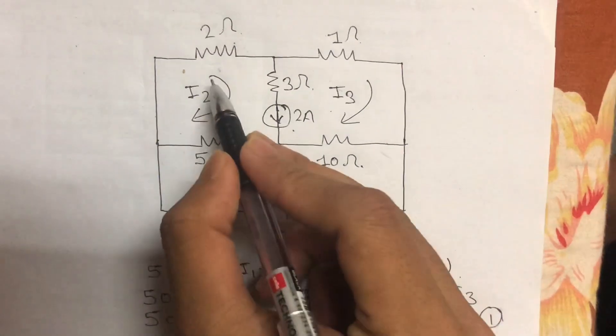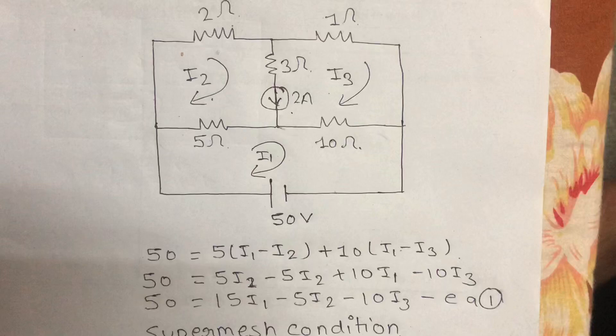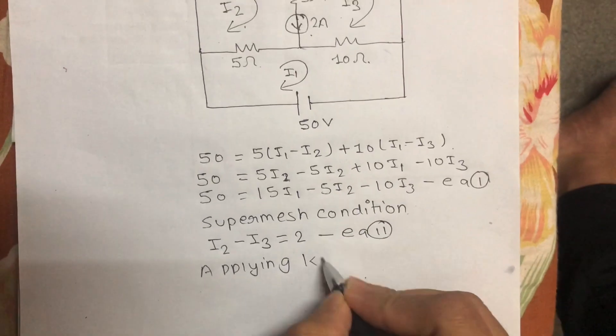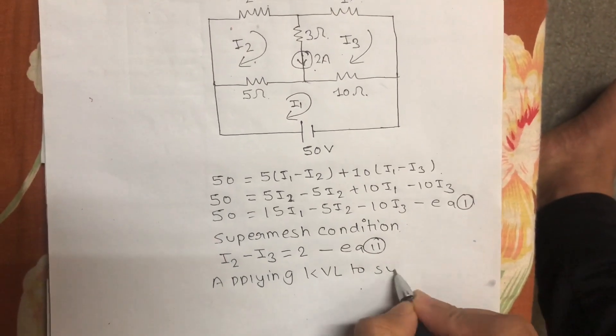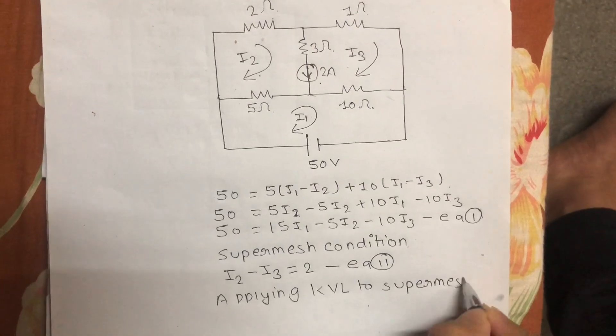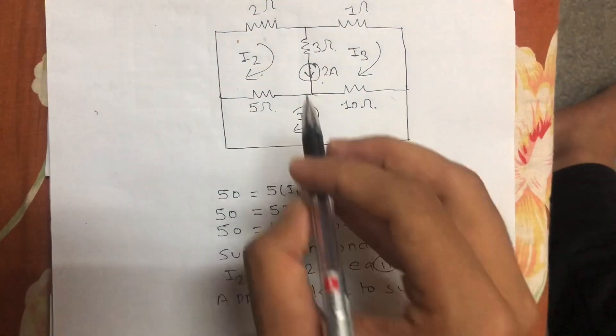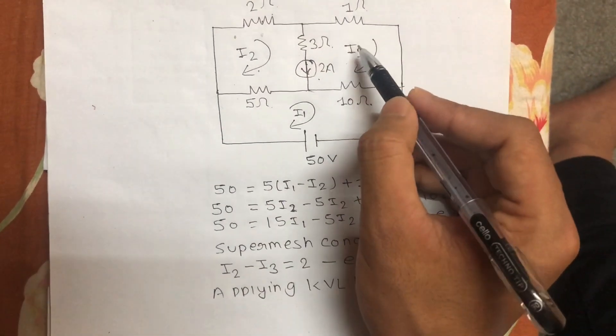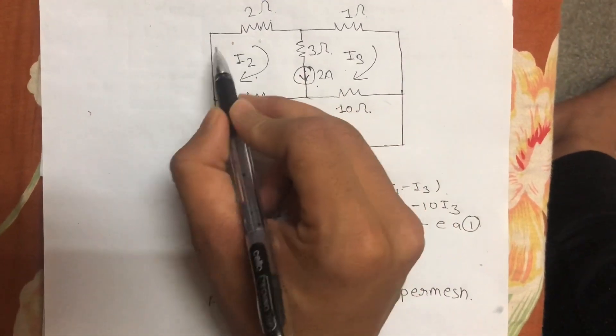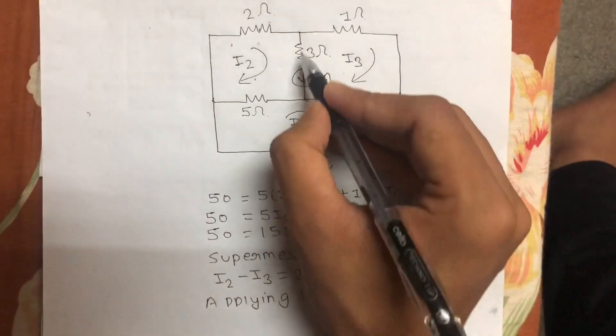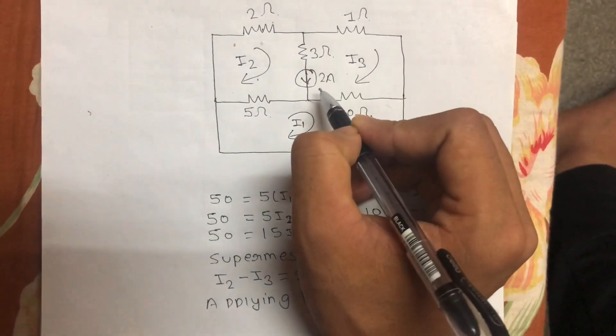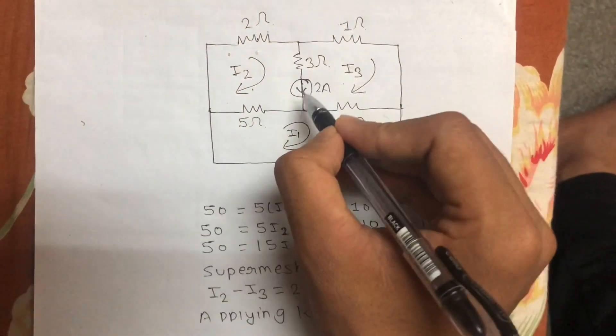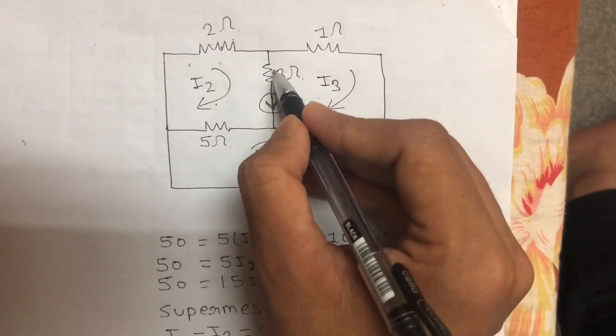Now I'm applying KVL to the super mesh. In the super mesh condition, the current source with resistor acts like a short circuit. This is a 3 ohm resistor in the super mesh condition.